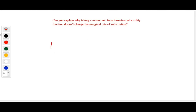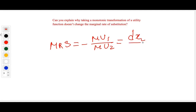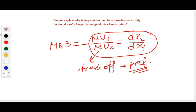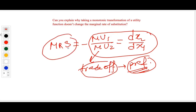Next question: can you explain why taking a monotonic transformation of a utility function does not change the marginal rate of substitution? The MRS is minus MU1 divided by MU2, which represents the trade-off. This trade-off is determined by preferences, and a monotonic transformation does not change the underlying preferences — only the utility function changes. So preferences are intact, the trade-off is intact, and therefore the MRS does not change. End of chapter four.